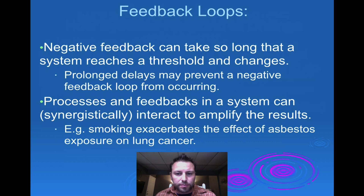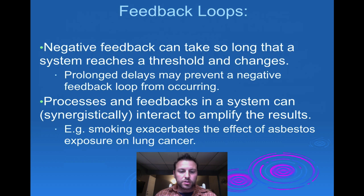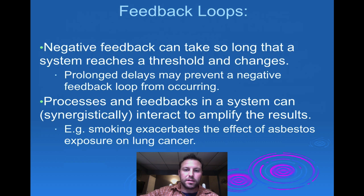Negative feedback loops can take a long time to occur — it's just something that happens in nature. Processes and feedbacks in a system can also have synergistic effects, where we see an amplification of results. For example, smoking exacerbates the effect of asbestos on lung cancer. We know asbestos can cause lung cancer, and so can smoking — combine them and you're increasing the chance of getting lung cancer.